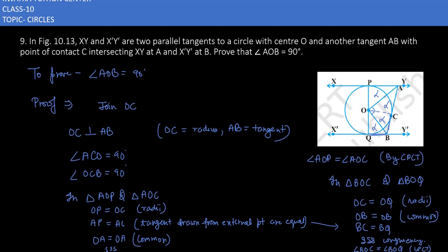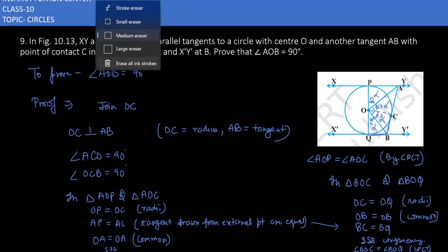Let angle AOP be angle 1, angle AOC be angle 2, angle BOC be angle 3, and angle BOQ be angle 4. From our proofs, angle 1 equals angle 2 and angle 3 equals angle 4. We can see that all four angles lie on a straight line, so we will use this to prove 90 degrees.